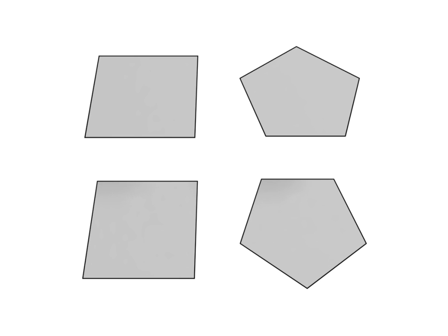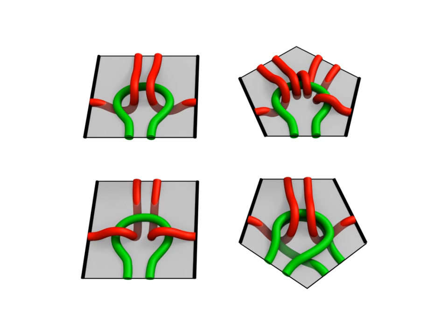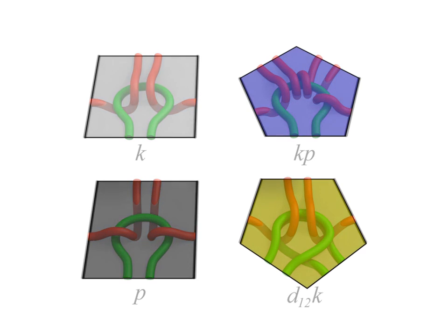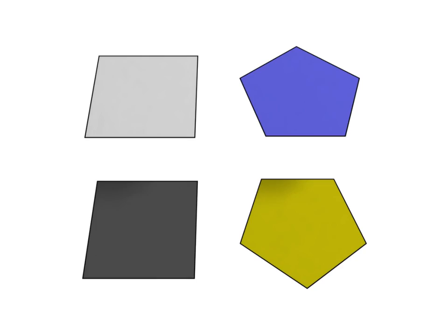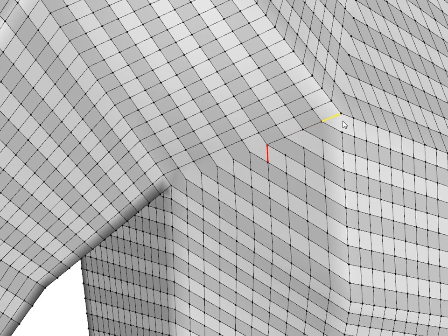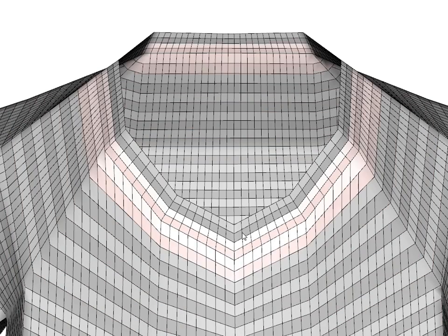Each face of the stitch mesh corresponds to a particular stitch of the yarn-level model. The stitch type of a face can be assigned by the user from a collection of predefined stitch types. In the interactive modeling window, we use color coding to display the stitch type of each face. We provide both low-level and high-level editing operations on the stitch mesh so that the user can easily specify the desired knitting pattern over the garment surface.